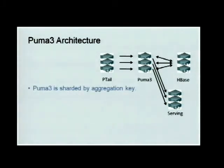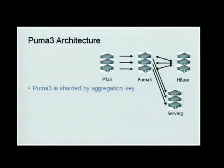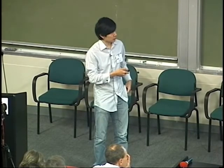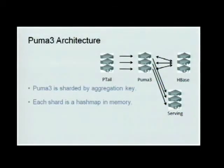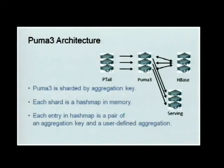The PTail data is already sharded by application ID or ad ID when it enters Puma3, so each Puma process has a full picture of one aggregation — for example, for one advertiser or one application. Each shard, which is each Puma3 process, is basically a hash table in memory. The hash table has a key which is the aggregation key — for example, the ad ID.